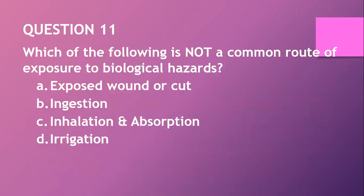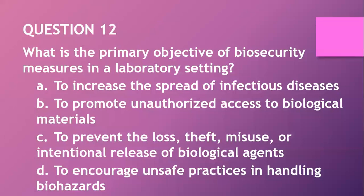Before I continue — have you subscribed? Have you commented? Have you liked? Have you shared? Okay, let's continue. Question eleven: which of the following is NOT a common route of exposure to biological hazards? A. Exposed wound or cuts. B. Ingestion. C. Inhalation and absorption. D. Irrigation. The answer is D — irrigation is not a common route.